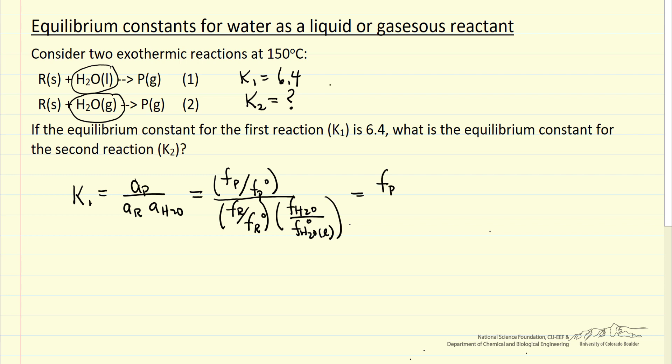Well, fugacity of P for ideal gas at one bar for pure component, denominator, this becomes one bar. Fugacity ratio for R, since R is a solid, change in the pressure really doesn't change fugacity significantly, so this ratio is going to be one. And then we have the fugacity of water at equilibrium, of course. And the fugacity of water as a liquid at 150 degrees C, fugacity is going to be the saturation pressure of the liquid.